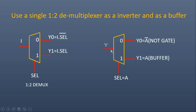Let me tell you how. If you apply logic 1 at input I and connect the select line to A, then y0 will be equal to A-bar, because select is A and I is 1. And y1 will be equal to A, because I is 1 and select is A. So if you see carefully, A is the input, y0 gives the output of a NOT gate, and y1 is the output of a buffer. This is how we can convert a 1×2 demultiplexer into a NOT gate as well as a buffer.